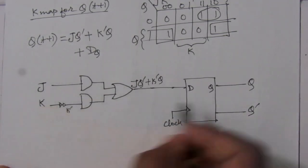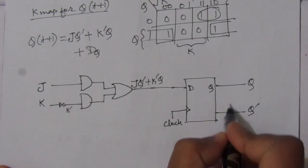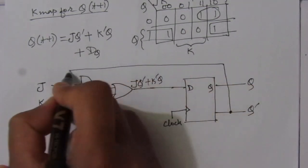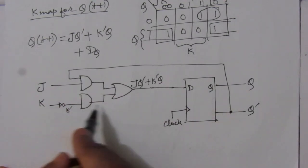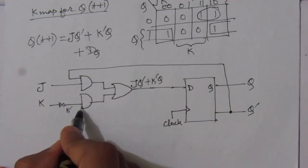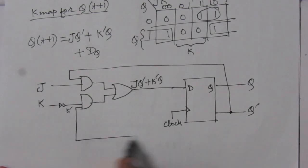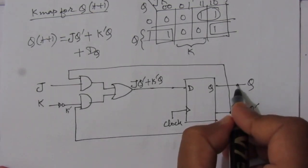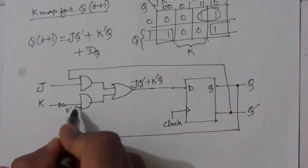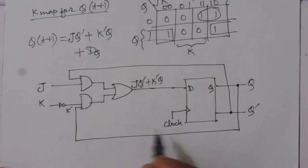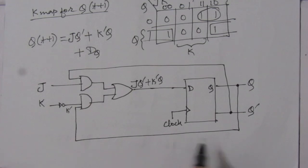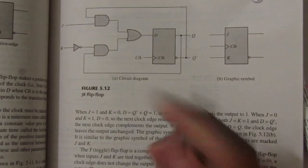The D flip-flop has input D, output Q, complemented output Q̄, and a clock input. The complemented output Q̄ is fed back to the first AND gate for the J·Q̄ term, and Q is fed back to the second AND gate for the K̄·Q term. This completes the circuit diagram.